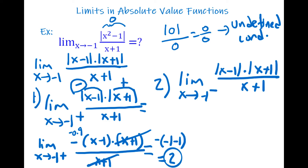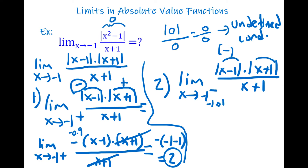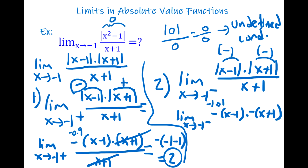When x goes to −1 from the left, take a value like −1.01. In this case, (x − 1) is negative and (x + 1) is also negative. To make both positive inside the absolute value, multiply each by a negative: −(x − 1) · −(x + 1) / (x + 1). The (x + 1) terms cancel.